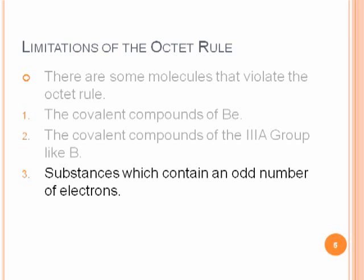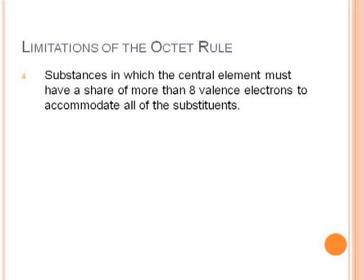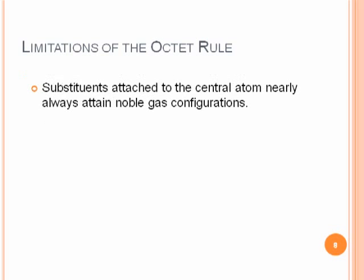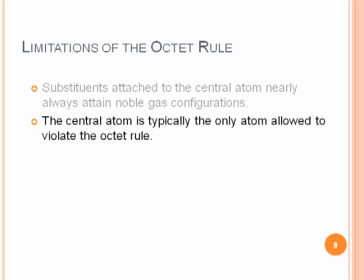Substances which contain an odd number of electrons — if you have an odd number of electrons, one of your atoms will not have eight electrons. There are also substances where the central atom needs more than eight electrons to accommodate all of the substituents, or it might have extra non-bonding electrons. Compounds of D and F transition metals can accommodate more than eight, but we will not consider those in this tutorial. Substituents attached to the central atom almost always obey the octet rule, and it's the central atom that's allowed to violate it — only certain atoms in row 3 and down in the P-block elements.